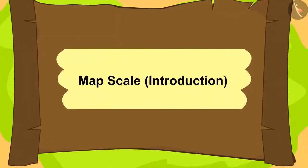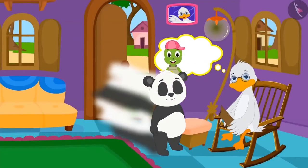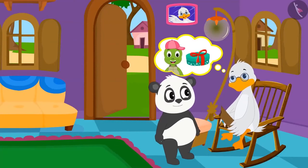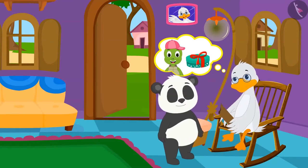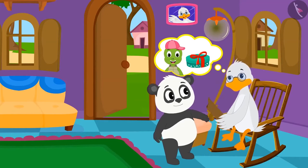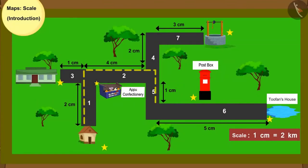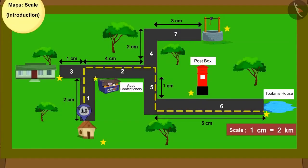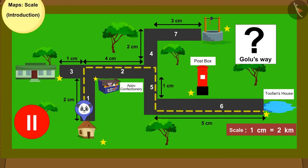Children, in this lesson we will learn about the scales on maps. For Tufan Tortoise's birthday, Babel Duck uncle sent some sweets with Golu Panda. Uncle gave Golu a map from his house to Tufan Tortoise's house, marked with a dotted line. Can you tell through which places Golu will pass on the way? You can find the answer by pausing the video.